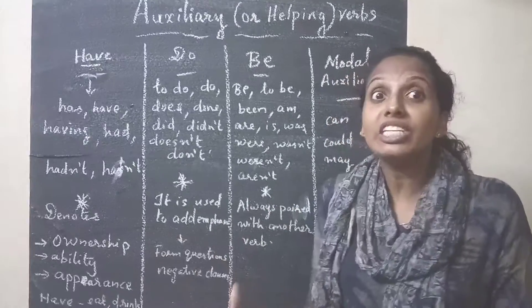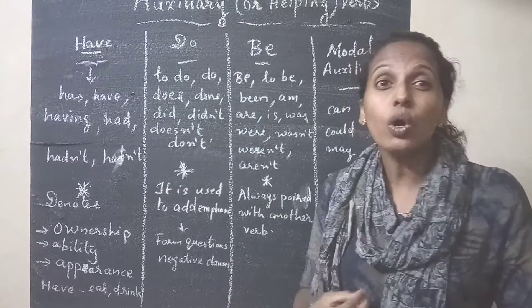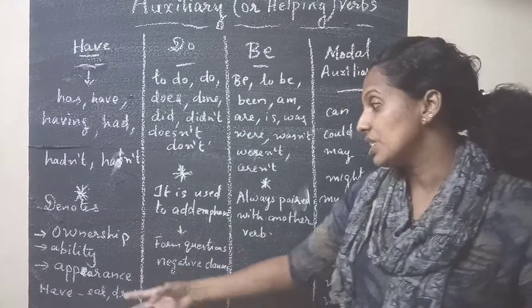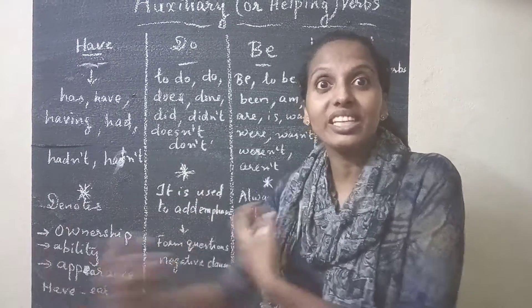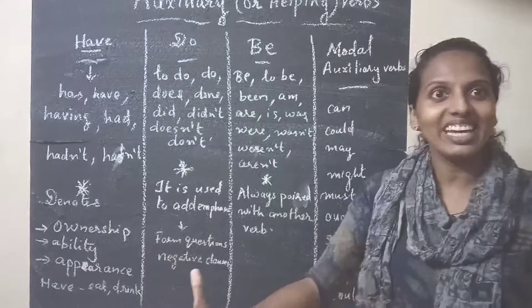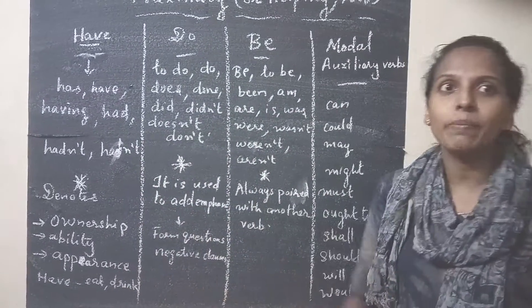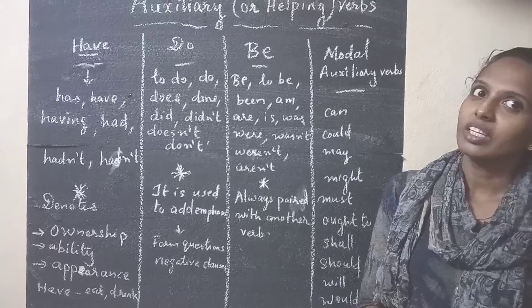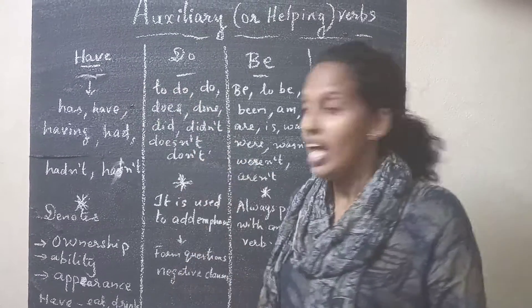It also denotes ability. And it denotes appearance — how something appears or what color it has. All these meanings related to appearance are shown using 'have.'